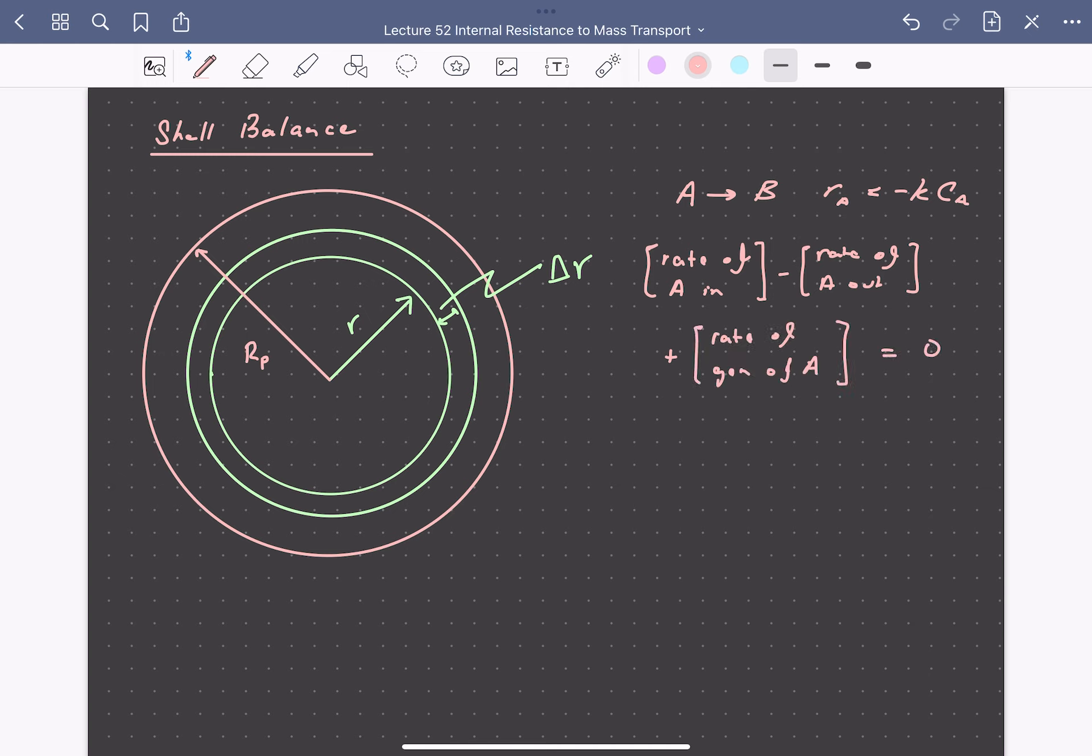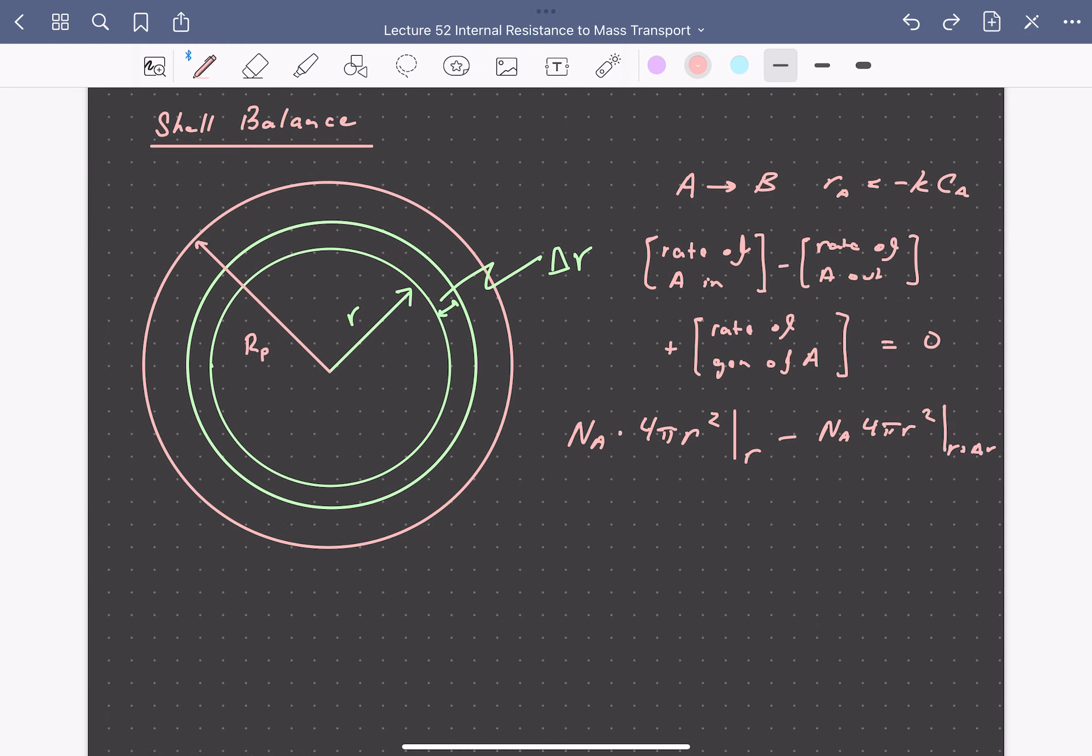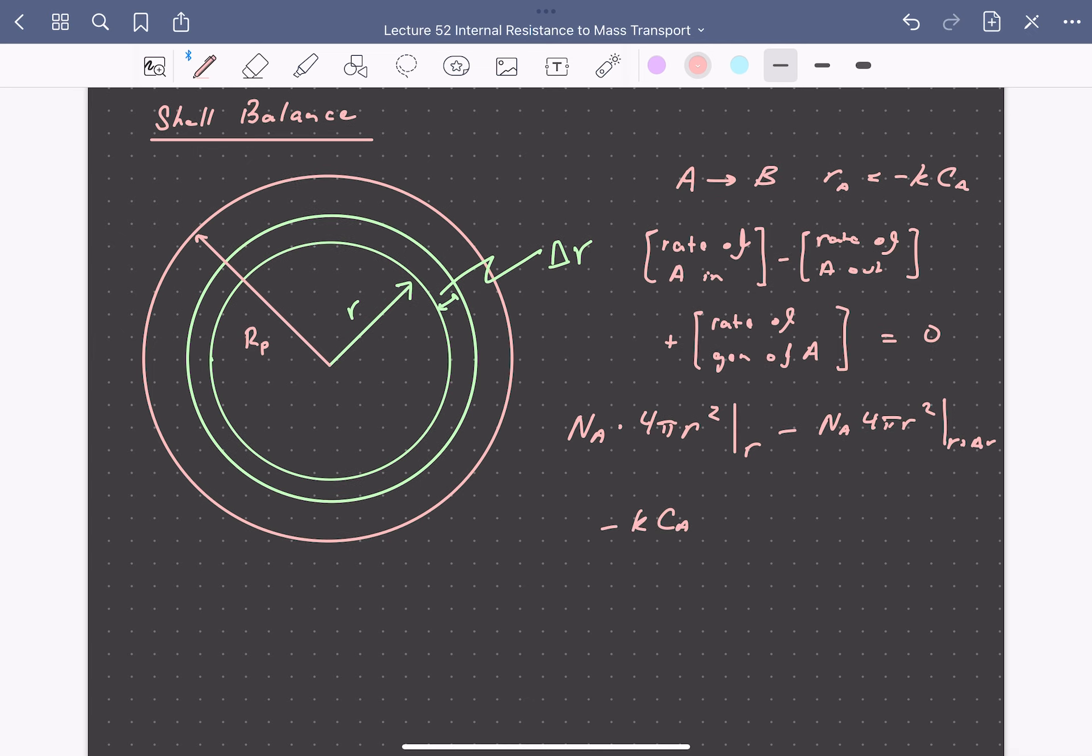So we can express each one of these terms mathematically. So each one of the diffusion terms will just be a flux, which we call N sub A, times the surface area available for diffusion. So that'll be 4πR². And this will be evaluated so the flux coming into the shell will be at a position R minus the same term at a position R plus delta R. So plus the rate of generation of A, which will be -K·CA times the volume available for reaction. So this volume of this control element is 4πR²·delta R, and this is all equal to zero.